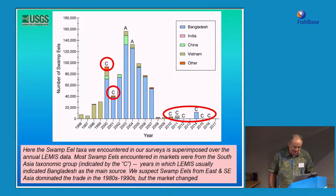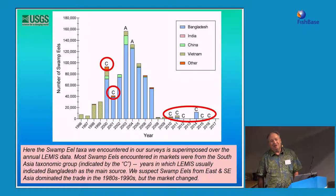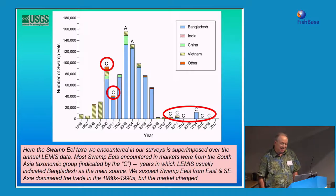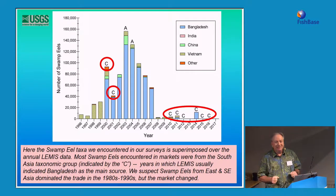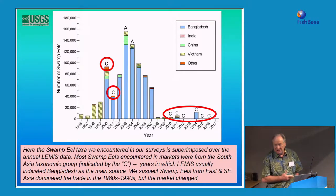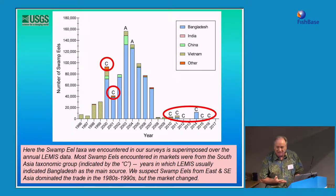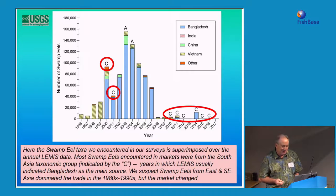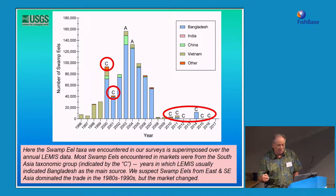I obtained records from the U.S. Fish and Wildlife Service, which maintains records on live imports. Everything in their database is listed as Monopterus albus — none labeled as kuchia — yet I marked the years I found Amphitnous kuchia in these markets. There is a big drop-off after about 2007 where, according to Fish and Wildlife Service records, swamp eels weren't being imported much anymore. But I later discovered that some of these eels were possibly intentionally misidentified as anguillid eels, possibly to skirt state regulations that didn't allow swamp eels.